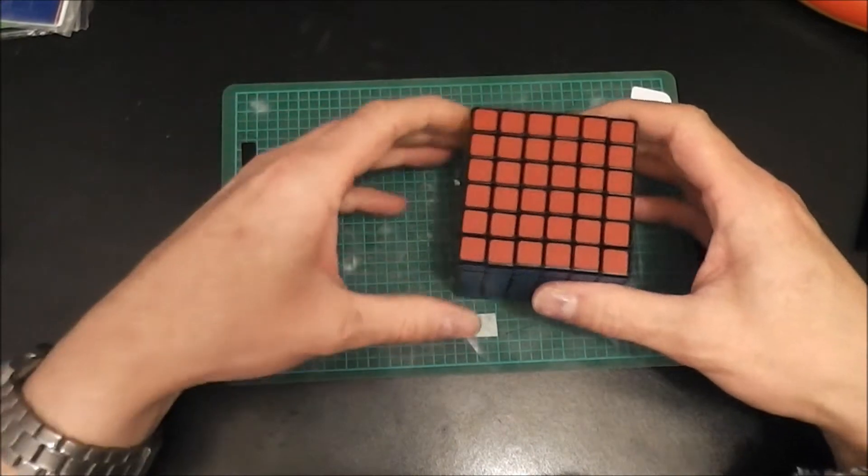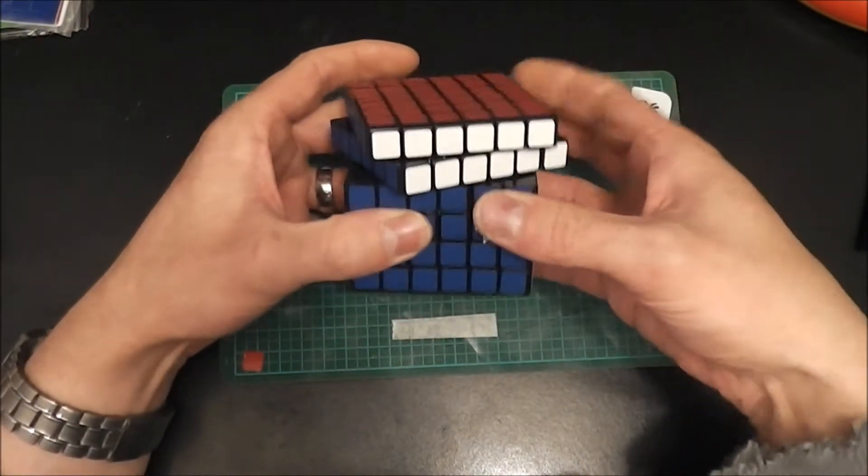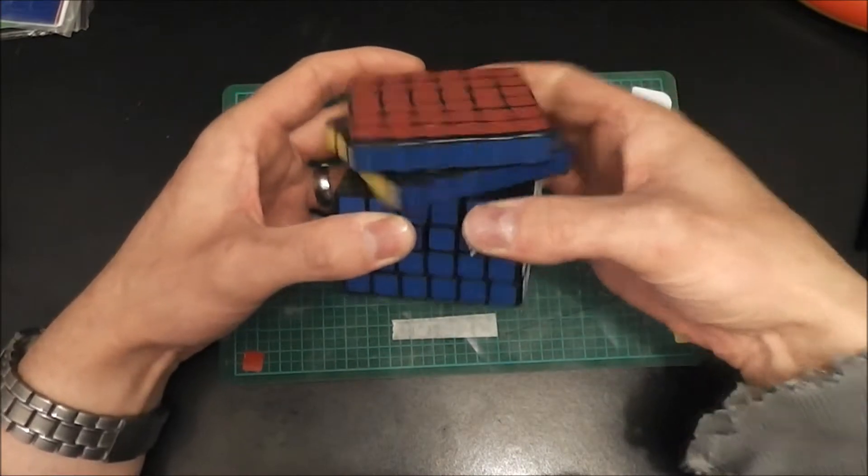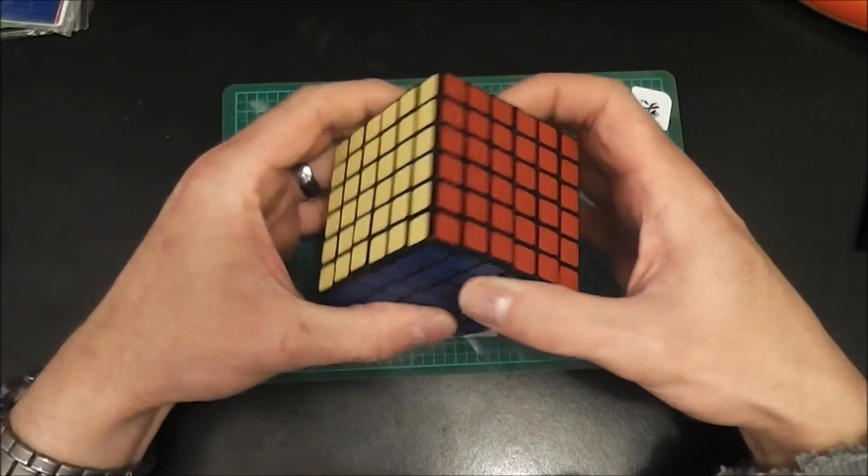It only cost a few quid more to get the two cubes together, so I thought I might as well just get it anyway. But now I don't know what to do with it, so I would like some suggestions please of what I can build out of this cube.